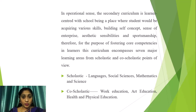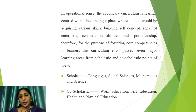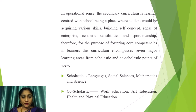In the operational sense, the secondary curriculum is learner-centered, with school being a place where students acquire various skills, build self-concept, sense of enterprise, aesthetic sensibilities, and sportsmanship. For the purpose of fostering core competencies in learners, this curriculum encompasses seven major learning areas from scholastic and co-scholastic points of view. Scholastic areas include languages, social sciences, mathematics, and sciences; co-scholastic areas include work education, art education, health, and physical education.